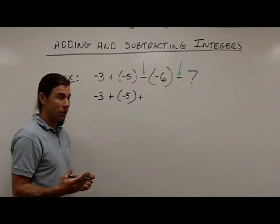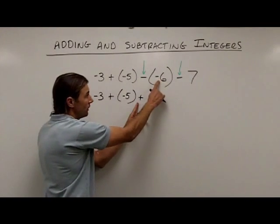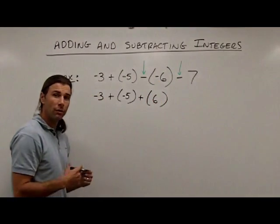So subtraction now becomes addition. And what I always need to do when I make that change is I need to add this number's opposite. Well, it was a negative 6. So when I add its opposite, it's going to become a positive 6.